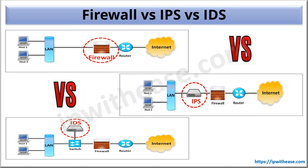Hello viewers. In this article we will understand the main difference between three key security components which are used in almost all company infrastructure setups: Firewall, IPS, and IDS. IDS means Intrusion Detection System and IPS means Intrusion Prevention System. In fact, many times network and security administrators also tend to face challenges when asked what are the primary differentiators between firewall, IPS, and IDS. So let's start.